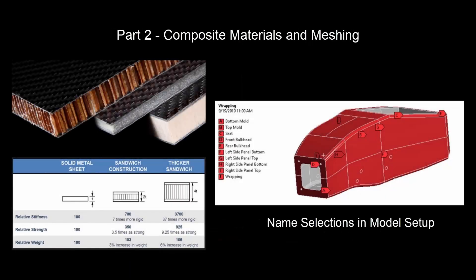In Part 2, composite materials are added to the model before meshing, and then name selections are created in ACP Pre.